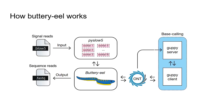To benchmark base calling with SLOW5, we first wanted to support the SLOW5 file format in a base caller. For that, we selected Guppy, a base caller developed by the nanopore sequencing company. Guppy is closed source and hence we cannot easily implement SLOW5 support. However, we wrote a wrapper called buttery-eel, which communicates with Guppy through an API to read SLOW5 files and write the FASTQ sequence.